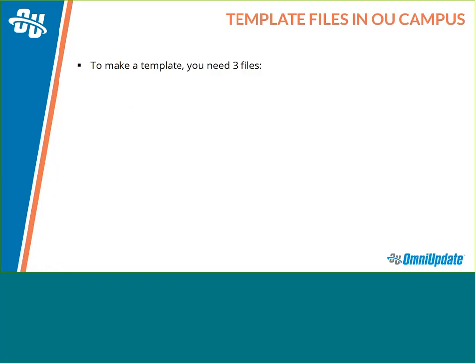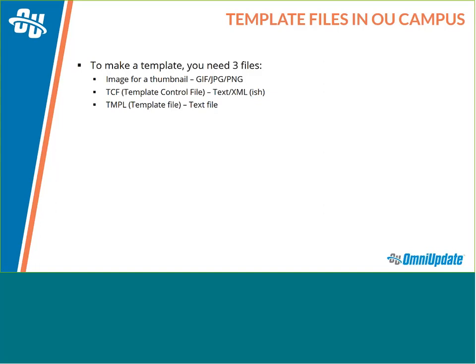There are essentially three files that come into play to get one of those new content items. The first is a simple image for a thumbnail — when you click the New button, you see nice little thumbnails with a title underneath them. The second is what we call a TCF, or template control file. This is a text file that almost follows XML standards, and it's triggered as soon as you click on that image thumbnail. The third file is what we call a TMPL, or template file, which becomes the foundation for whatever new content we're creating.